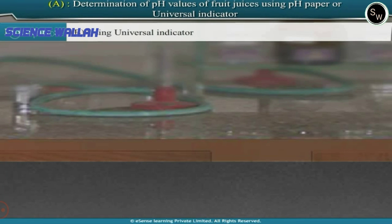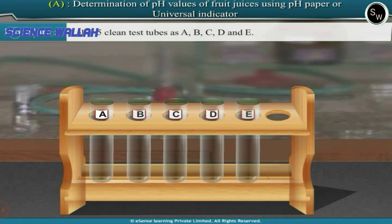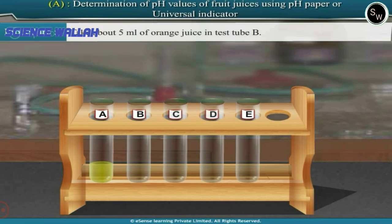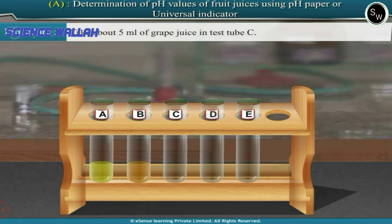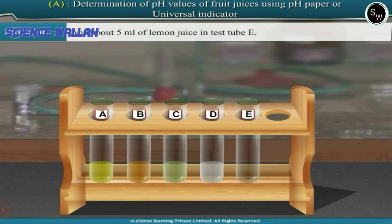Part B: Using universal indicator. Label five clean test tubes as A, B, C, D, and E. Take about 5 ml of pineapple juice in test tube A, 5 ml of orange juice in test tube B, 5 ml of grape juice in test tube C, 5 ml of sweet lemon juice in test tube D, and about 5 ml of lemon juice in test tube E.